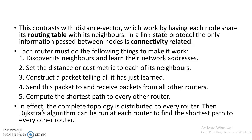Each router must do the following things to make Link-State routing work. First, discover its neighbors and learn their network addresses. Second, set the distance or cost metric to each of its neighbors. Third, construct a packet telling all it has just learned. Fourth, send this packet to and receive packets from all other routers.